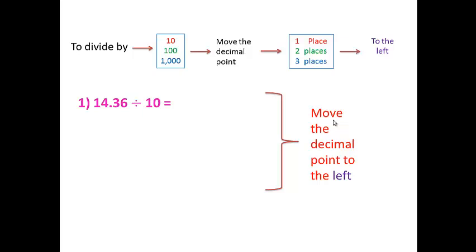Example: 14.36 divided by 10. Move the decimal point to the left one step, taking the point with you. So the answer is 1.436. The point moves from its original position one place to the left.